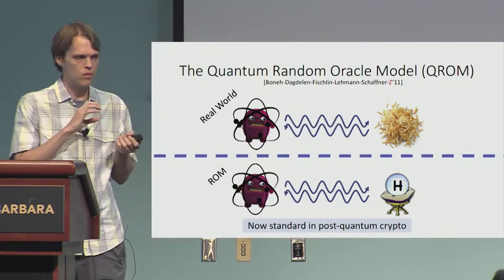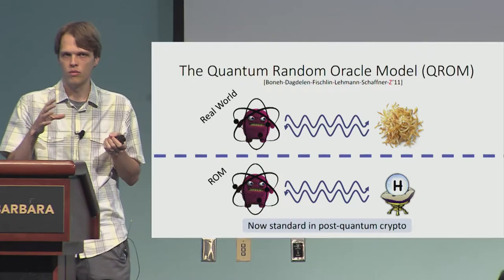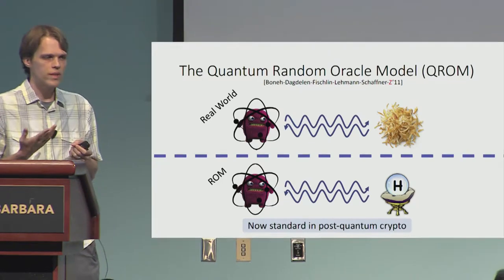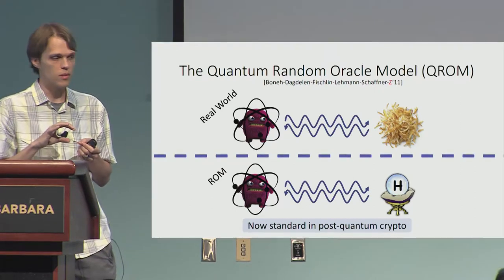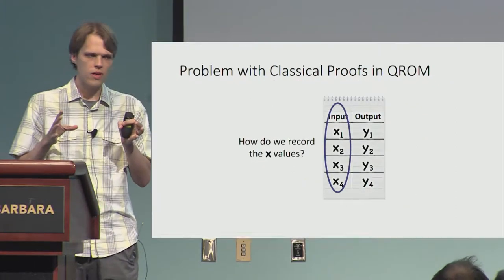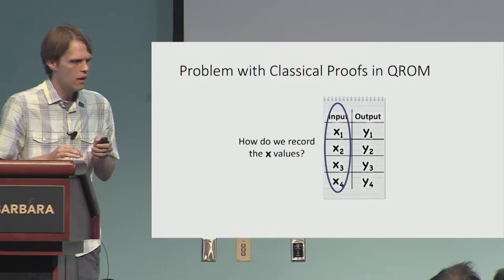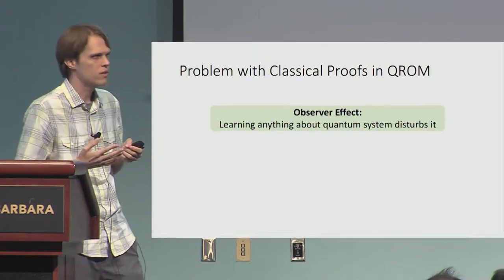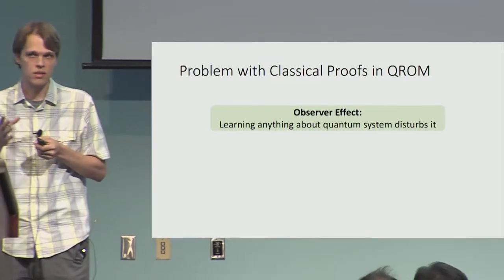Back in 2011 we asked the question of what happens when we move to quantum. Now we have a quantum adversary, and in the real world the quantum adversary can interact with the hash function on quantum inputs — because the adversary evaluates the hash function for themselves. So in the random oracle model it only makes sense to model the random oracle as a function that's queryable on quantum inputs. But here's the problem. Remember this classical on-the-fly simulation. Suddenly this becomes much trickier in quantum, and the reason has to do with something I'll just call the observer effect.